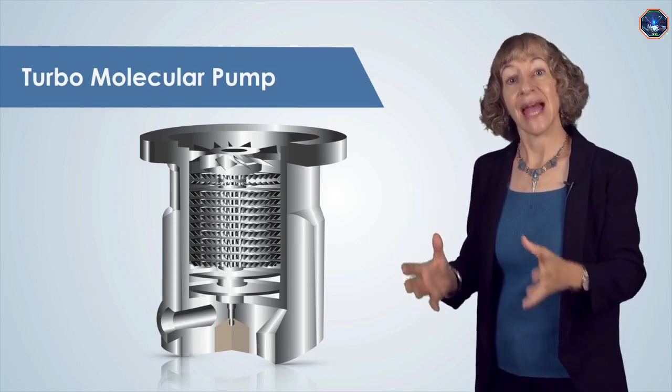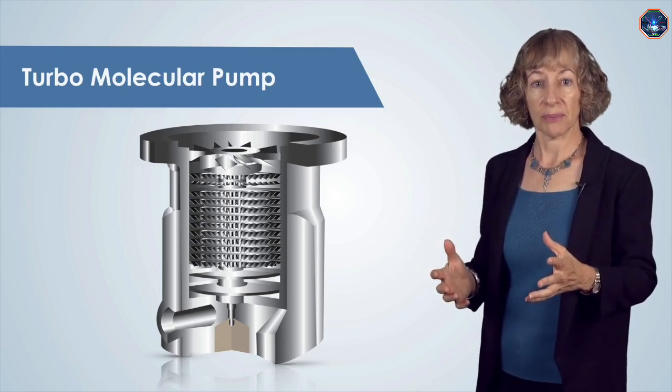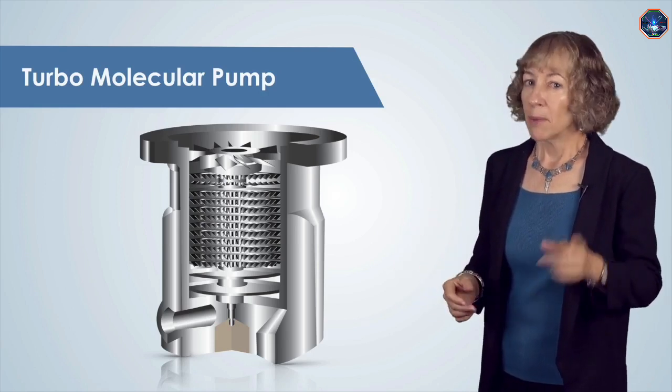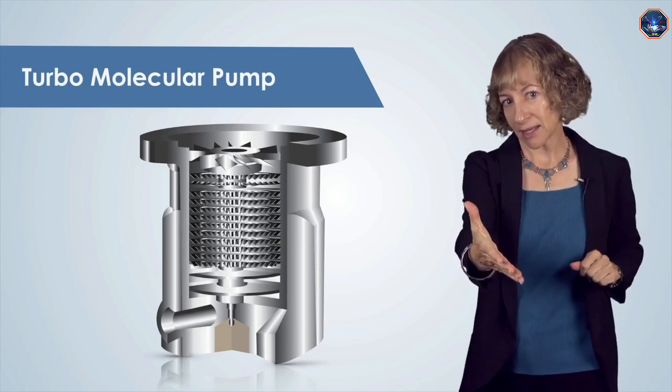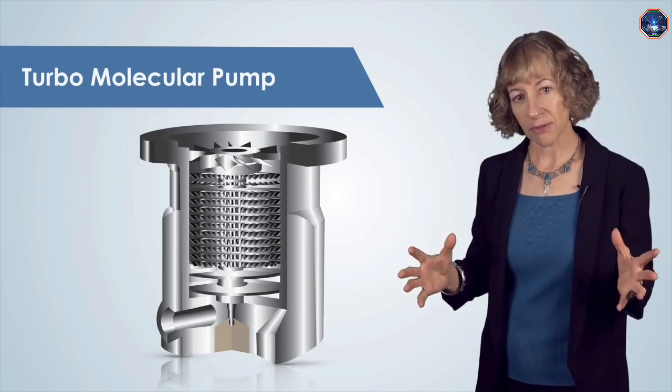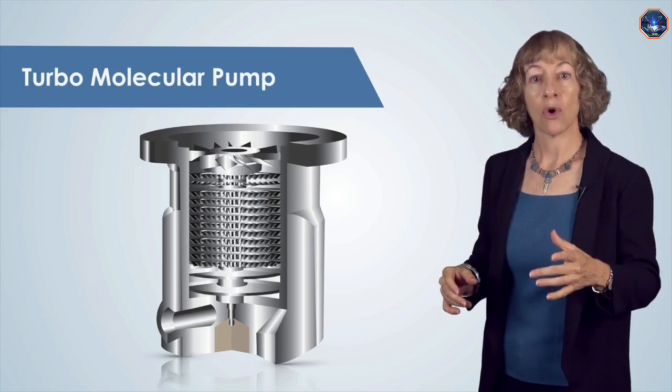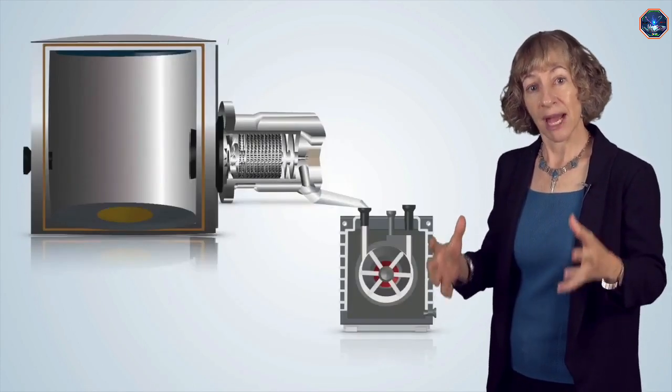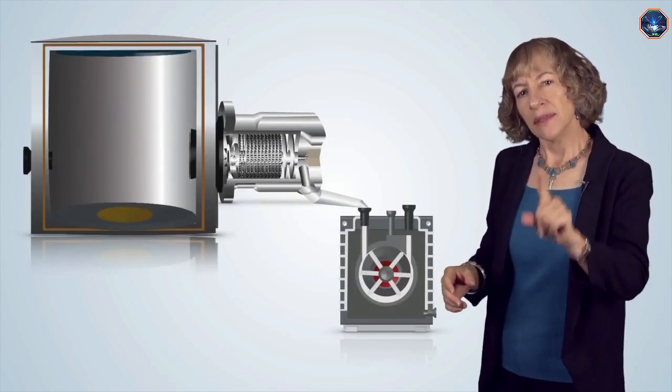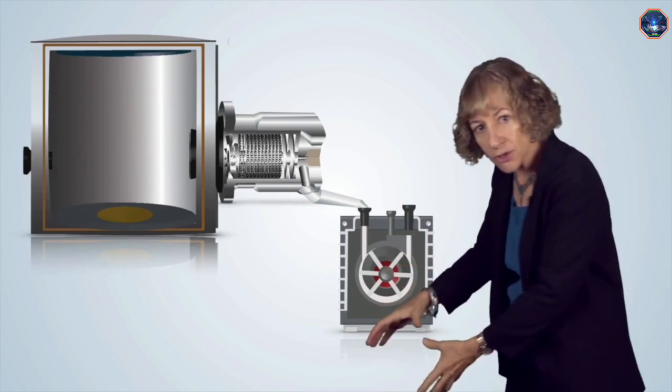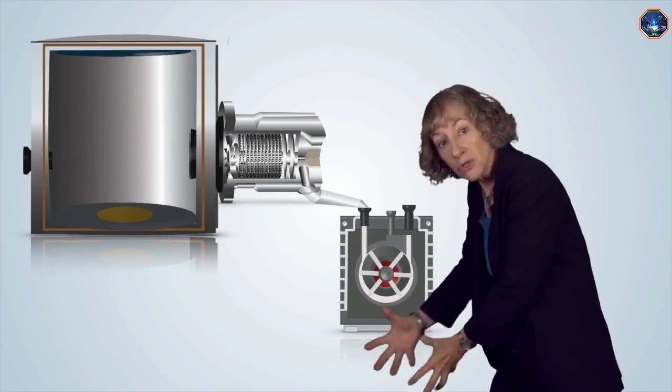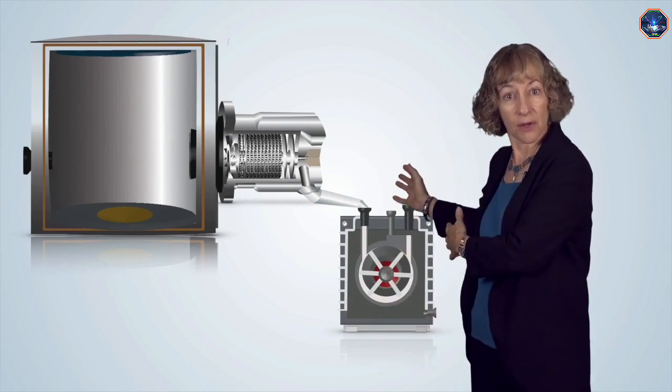First we rough pump the system with a mechanical pump, and then we use the turbo pump afterwards. But there is a catch: a turbo pump needs a helping hand—it cannot pump alone. It gets help, or we say is backed by, a mechanical pump. This simply means that the air from the output of the turbo pump is removed by the mechanical pump.